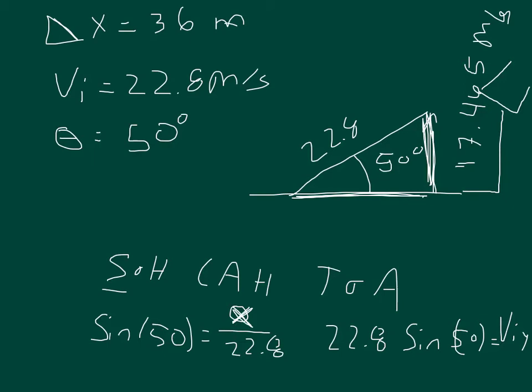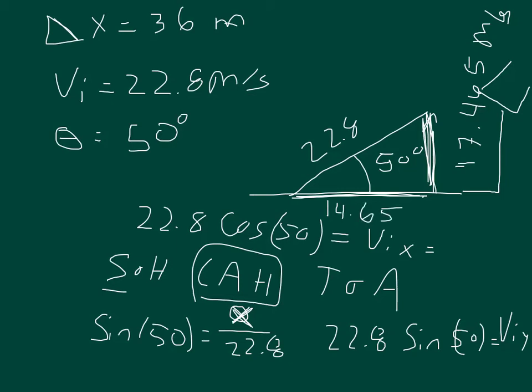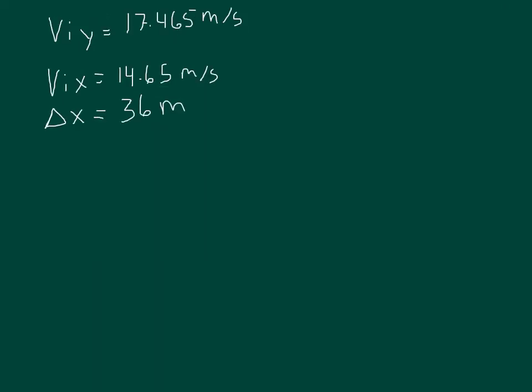And then by that same rule, the adjacent over hypotenuse, I can find the horizontal component. So I can do 22.8 cosine 50 degrees, not 50 radians. Make sure your calculator is in degrees. So 22.8 cosine 50 is going to equal my initial velocity in the X direction, and that equals 14.65 meters per second.